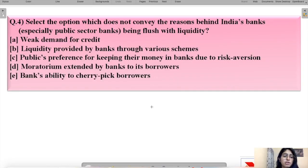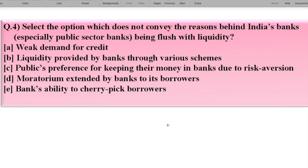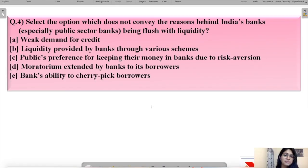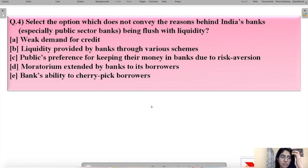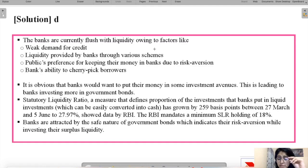Question number four asks: select the option which does not convey the reason behind India's banks — especially public sector banks — being flushed with liquidity. You have to identify which reason does NOT lead to banks being flushed with liquidity. The correct answer is option D: moratorium extended by banks to its borrowers.